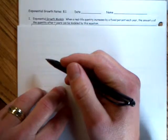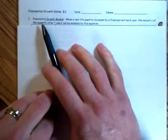This is in your workbook, page 4. It says at the top, exponential growth models.